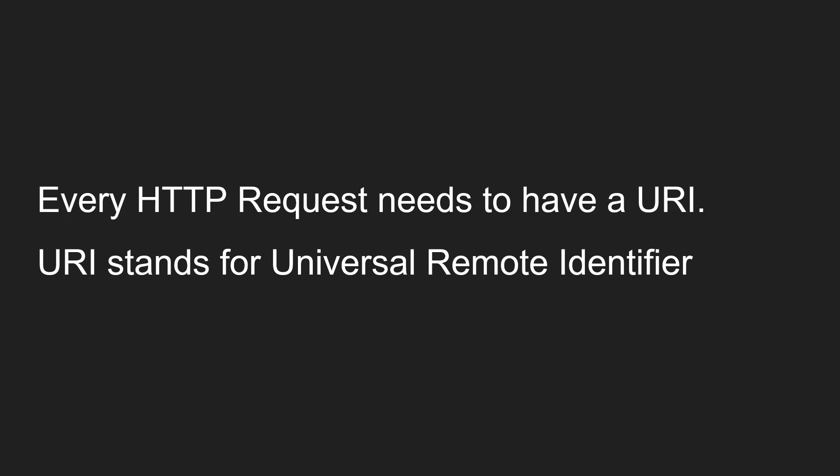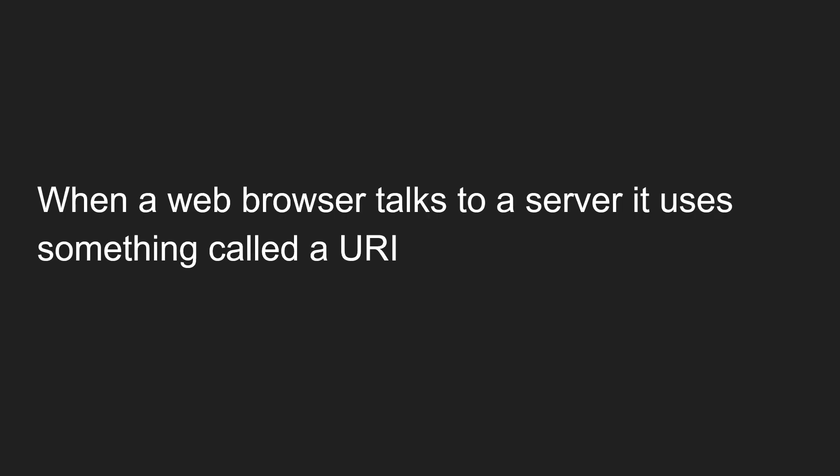Every HTTP request needs to have a URI. When we are trying to make an HTTP request, we need to have an address — a location — so we know where to make the request and to whom. If you are trying to ask something, you need to know the address of that party. So when making an HTTP request, the URI is nothing but that address.